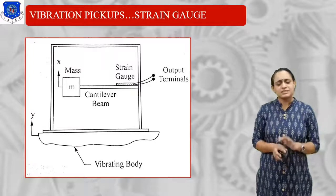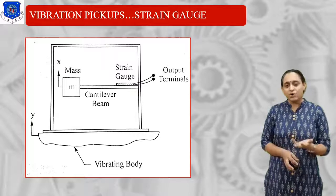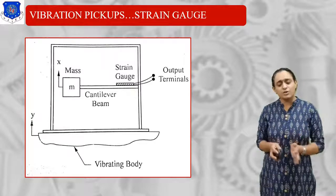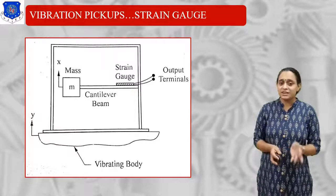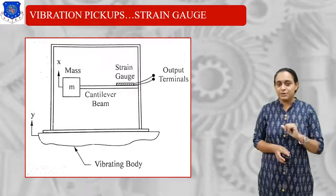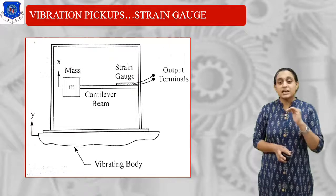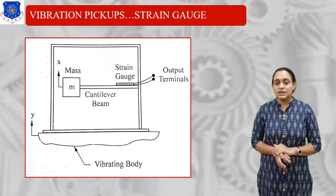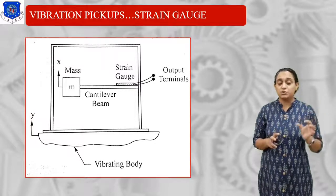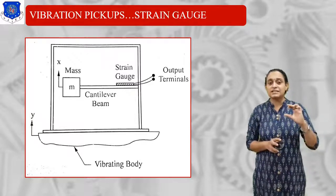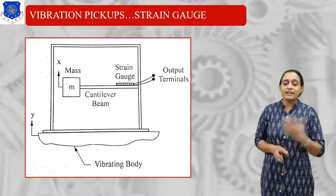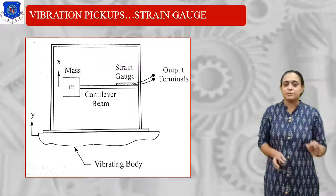Now let us look at vibration pickup using a strain gauge. All of the system should be mounted on a vibrating body. Here there is the strain gauge on the vibrating body. By the base vibrations having y amplitude, the strain gauge will give the exact output. The mass is fixed with the cantilever beam and the mass pans towards the upward or downward side — it has longitudinal vibrations. By this longitudinal vibration, the strain gauge gives you the output. This is one of the simplest types of vibration pickup.